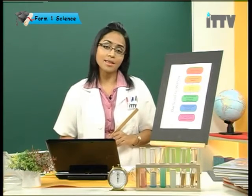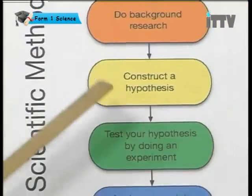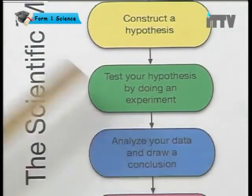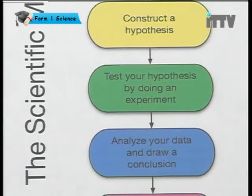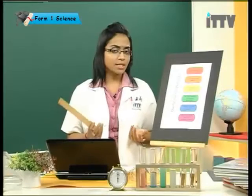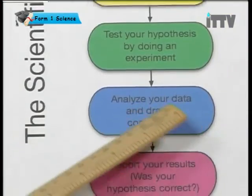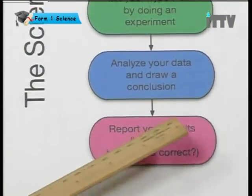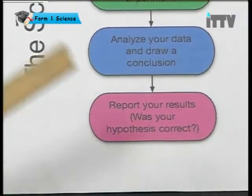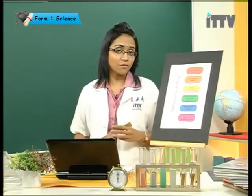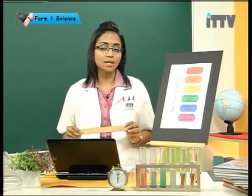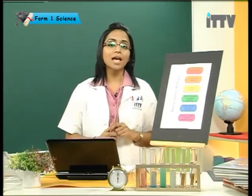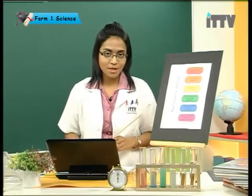Let's see further what is there in the scientific method. After constructing a hypothesis, you have to test your hypothesis by doing an experiment. After the experiment, you get results. Analyze your data and draw a conclusion. And lastly, report your results. Was your hypothesis correct? At the end of an experiment, you have to answer whether the hypothesis was valid or not. This is how you carry out the scientific method.